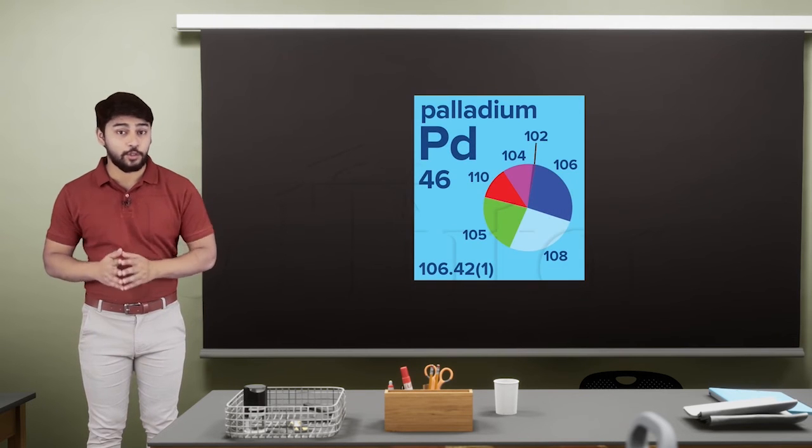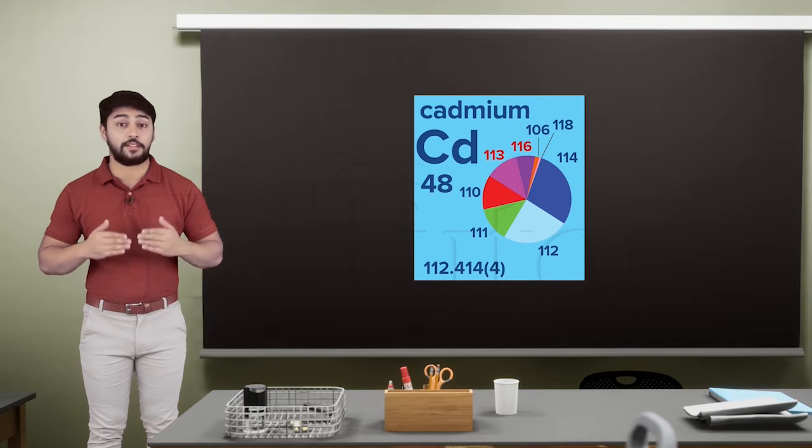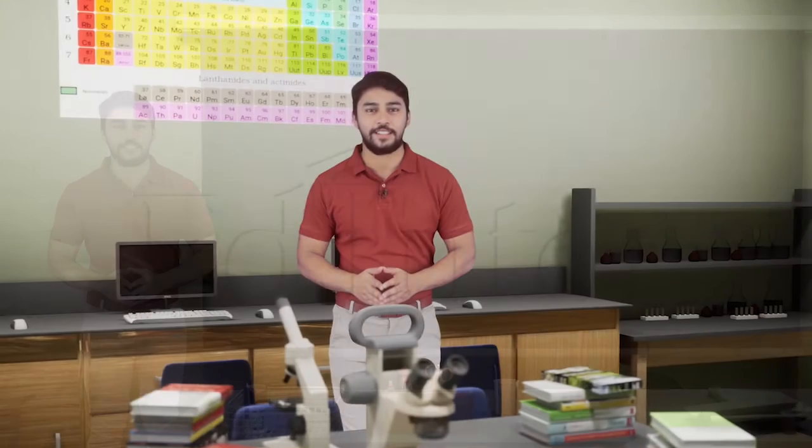Palladium has also 6 isotopes, cadmium has 9, and tin has 11 isotopes. So you can clearly see that different elements can own a different number of isotopes.